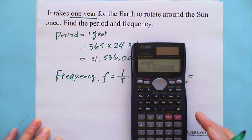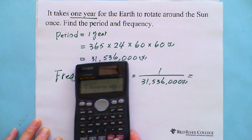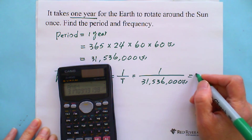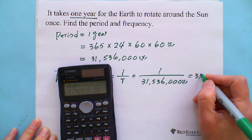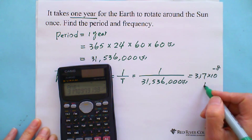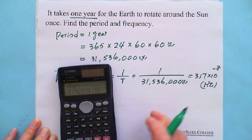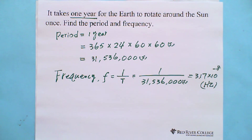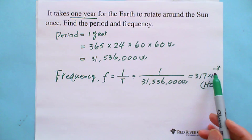We got this one on the bottom, 31 million 536 thousand seconds. So we do this one, just put the reciprocal. You got this answer is 3.17 times 10 to the negative 8 Hertz. So 1 second just rotates about negative 8.